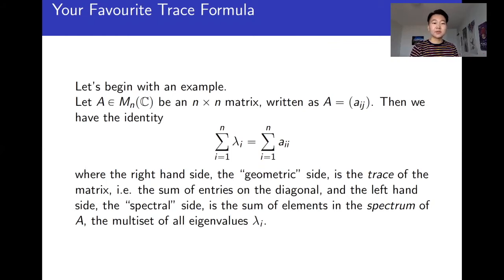This is an example of a trace formula from linear algebra. It just states that the trace of a matrix, which is the sum of all the diagonal entries, will be the same as the sum of all eigenvalues of this matrix. We call the multi-set of all eigenvalues of the matrix the spectrum of the matrix. Now an important fact about this equation is that the equality holds no matter what basis we're in. So no matter what basis I write my matrix A in, the trace will remain invariant.